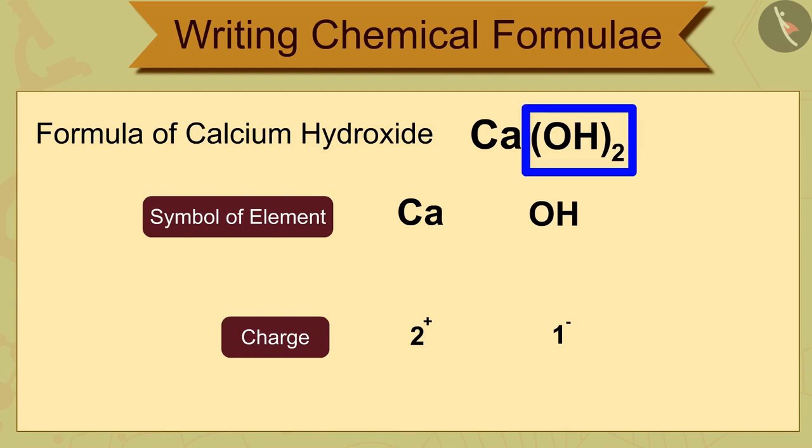the formula for calcium hydroxide is Ca(OH)2 and not CaOH2. Here, the bracket around OH with a subscript 2 indicates that there are two hydroxyl OH groups joined to one calcium atom.